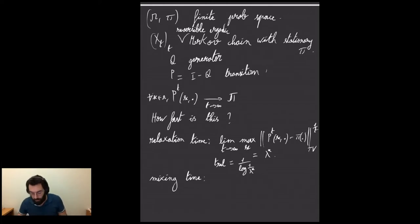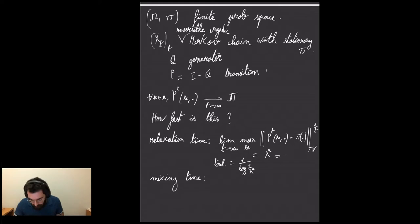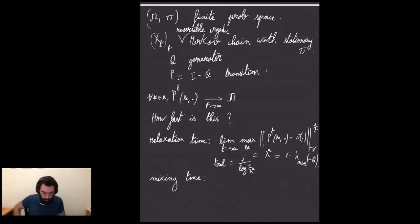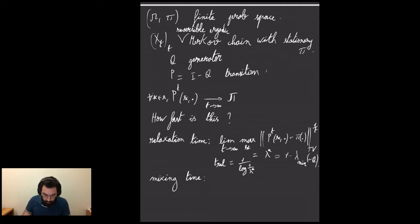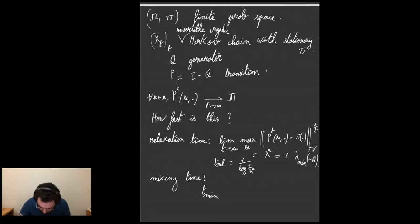The relaxation time can be viewed as an asymptotic mixing time. Using the multiplicativity of P^t, we define λ* as the limit as t→∞ of the maximum total variation distance from P^t to the stationary measure, raised to the power 1/t. The relaxation time is then 1/log(1/λ*). For reversible Markov chains, this equals 1/(1 − λ_min(−Q)), i.e., it's the inverse spectral gap.